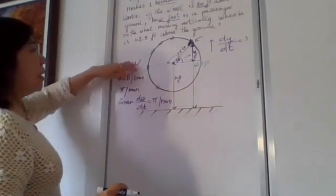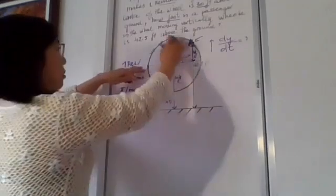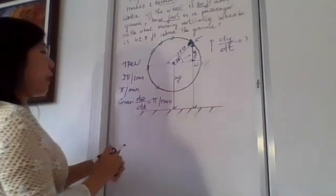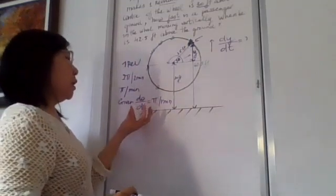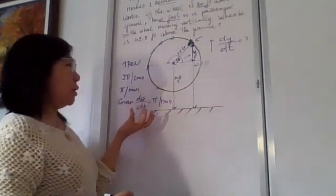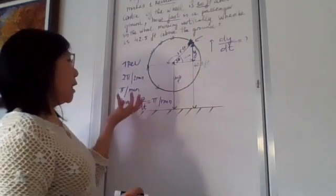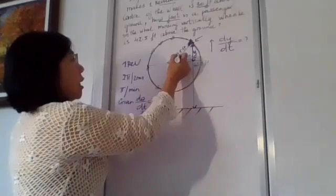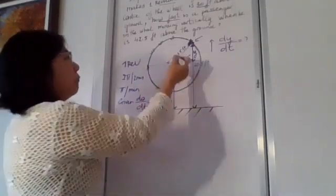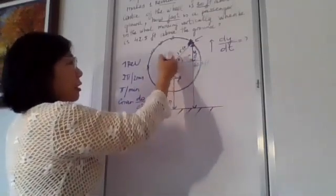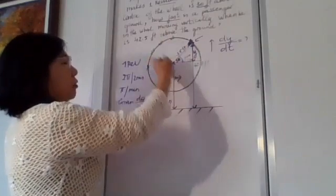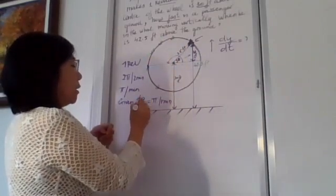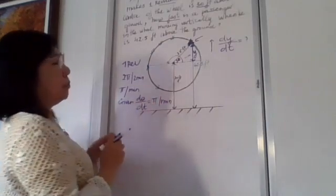The hint tells us one revolution in two minutes, so we find the rate in one minute: π radians per minute. That is the angular rate d theta over dt — how fast the Ferris wheel turns through the angle, which is d theta over dt equals π per minute.